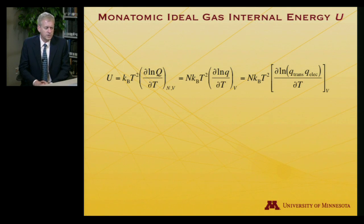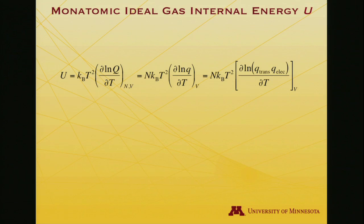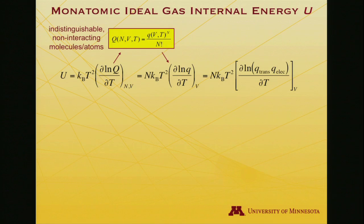Let's use that to predict the internal energy of our monatomic ideal gas. The internal energy is kT² times the partial derivative with respect to T of the log of the partition function. By virtue of the ensemble partition function being for a gas of indistinguishable, non-interacting molecules or atoms, we can write it as a function of the atomic partition function. So I'll substitute that in.